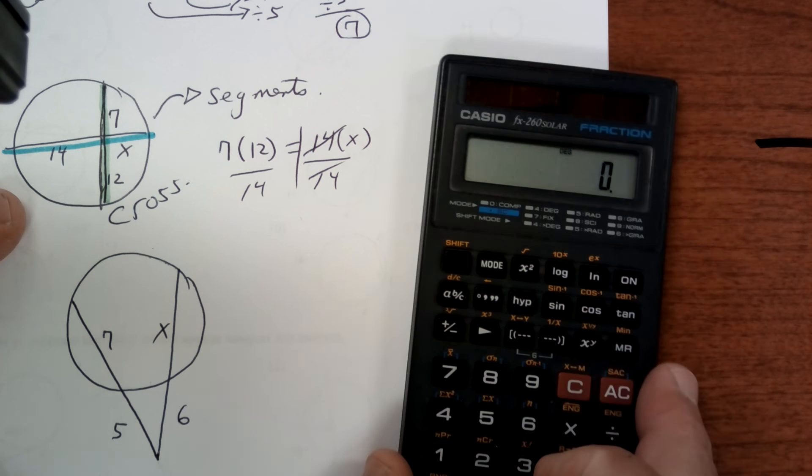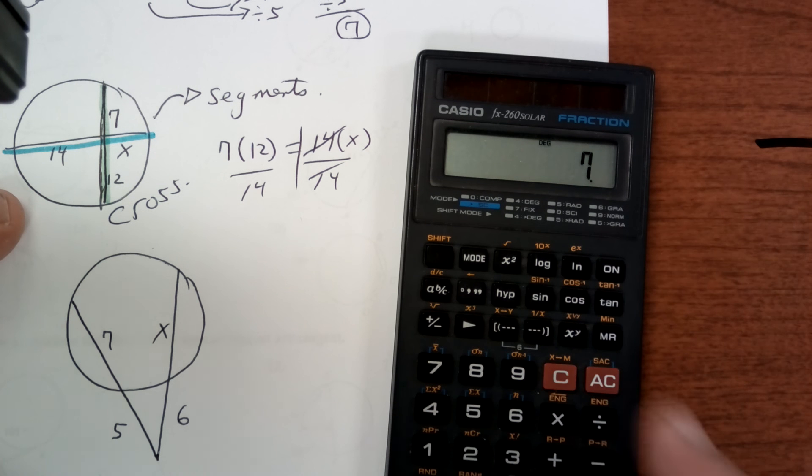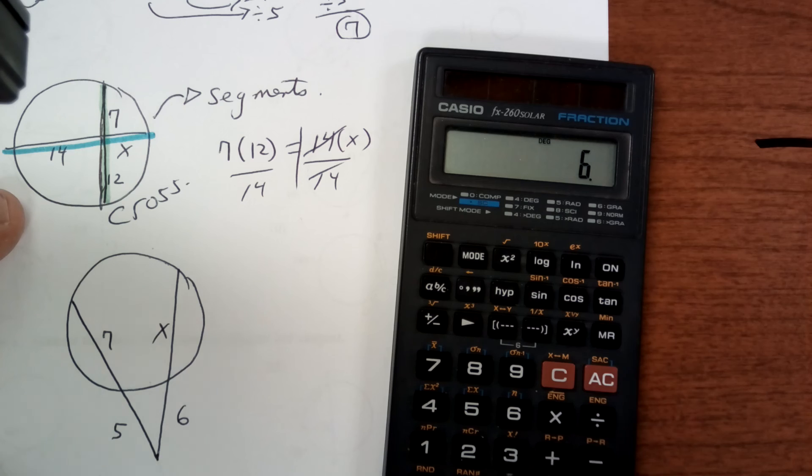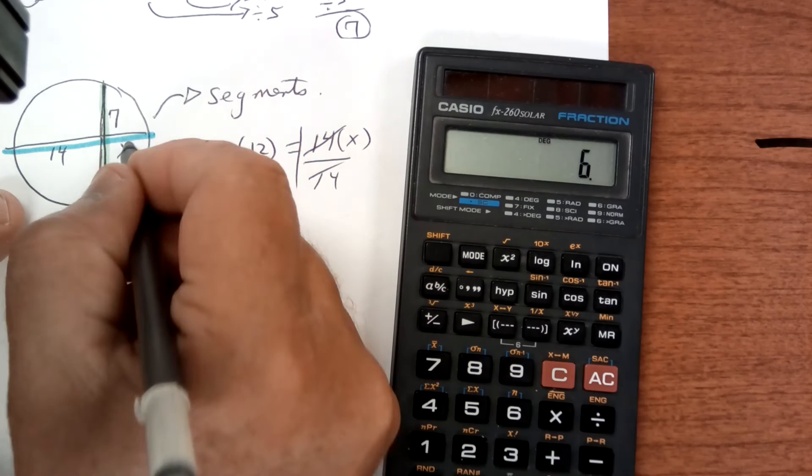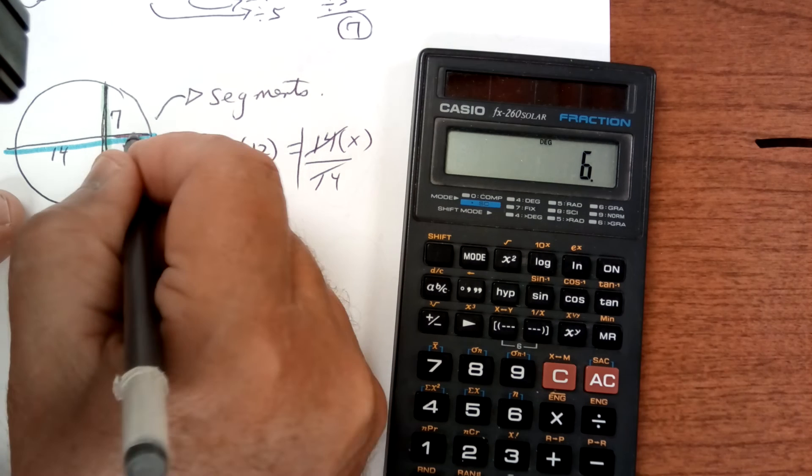So it's going to be 7 times 12. Press equals divide by 14. And you get 6. So this segment here is 6 inches.